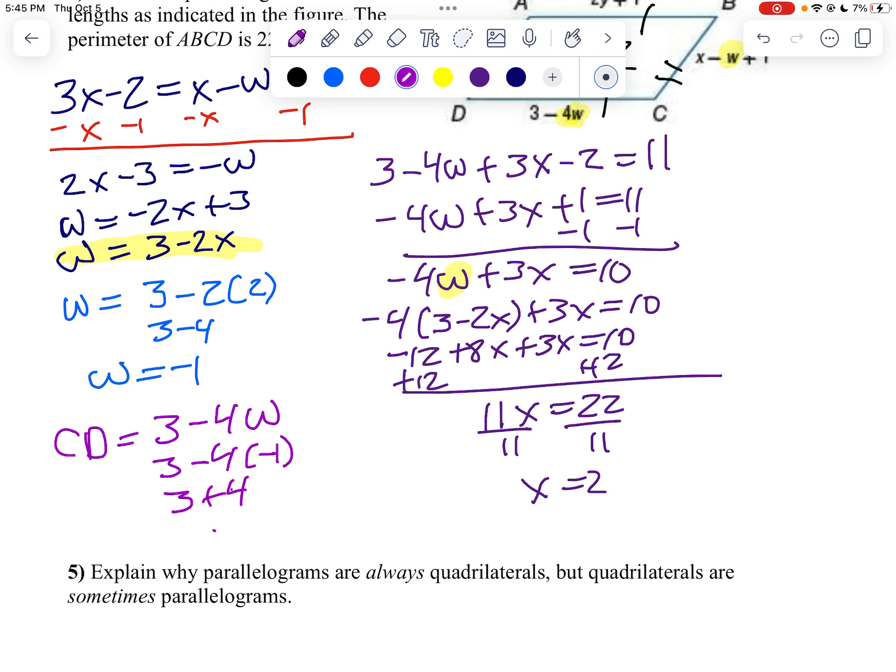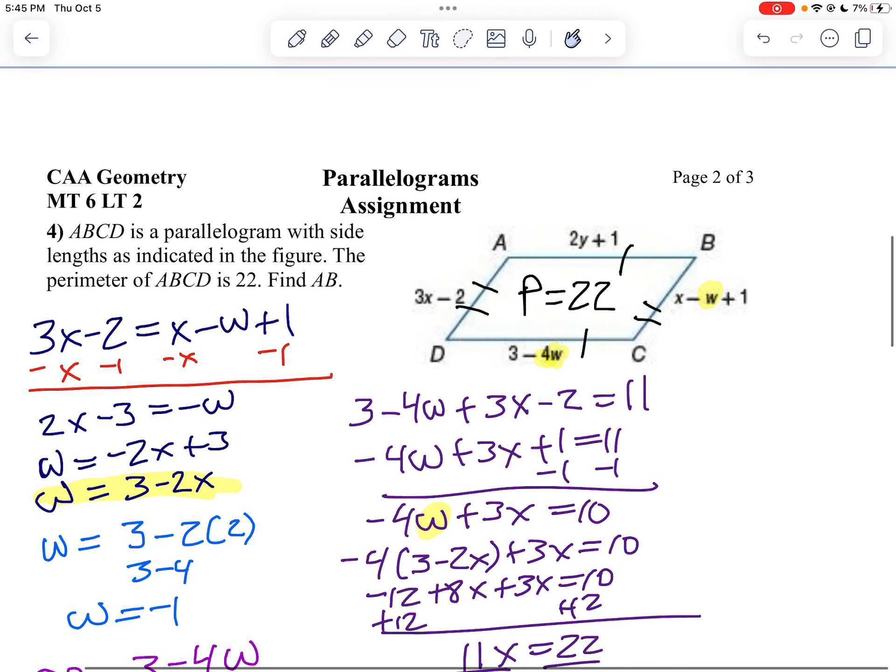And since I have a parallelogram, now I know that CD is 7. Well, that's the same thing as AB, isn't it? And that's what you're supposed to find. So we know on this problem, AB is 7.